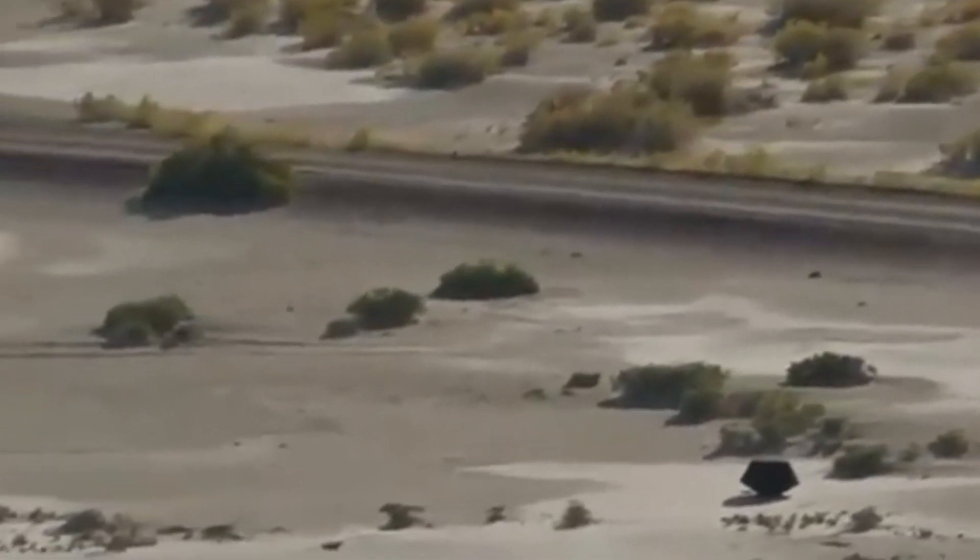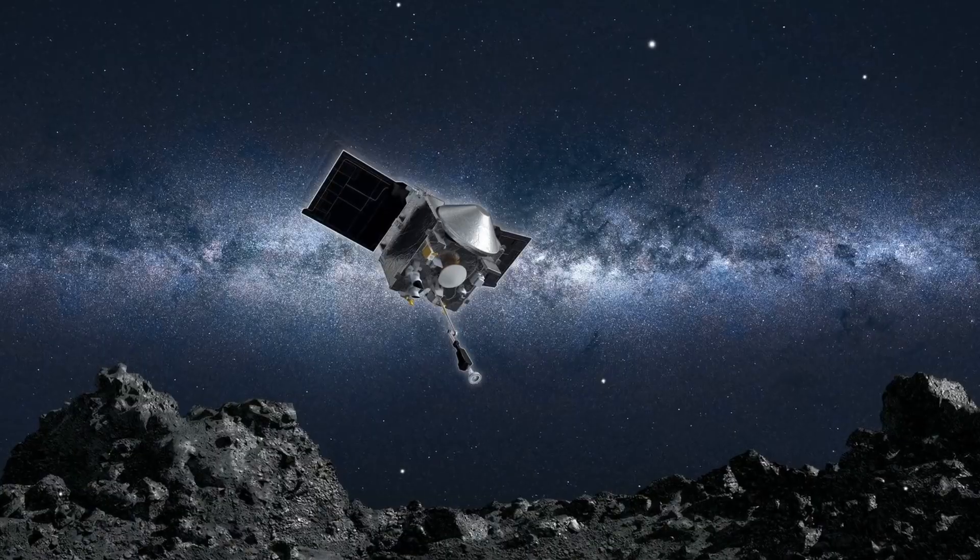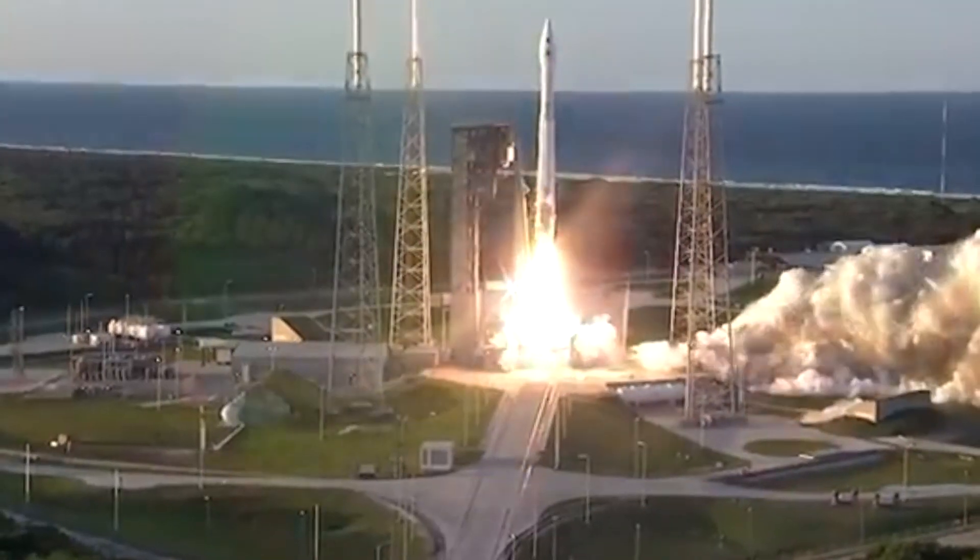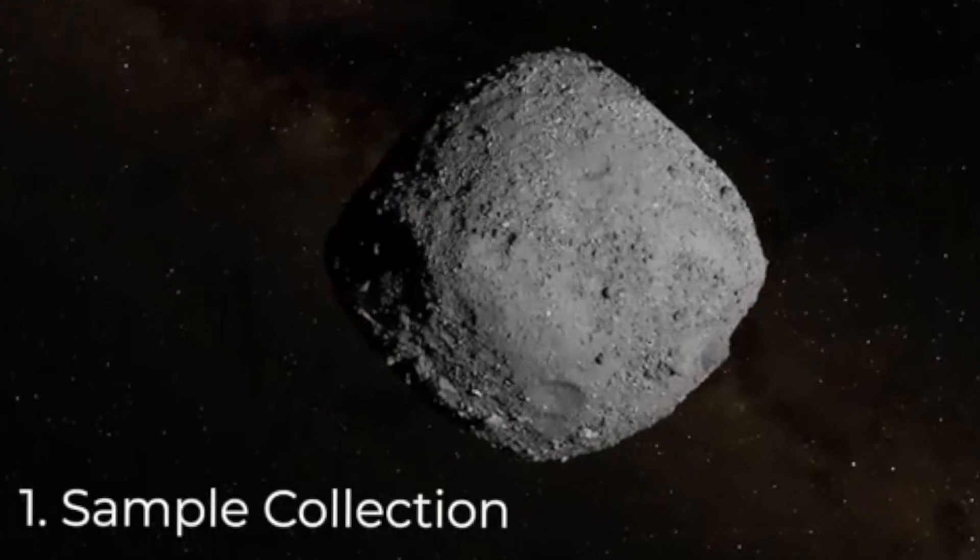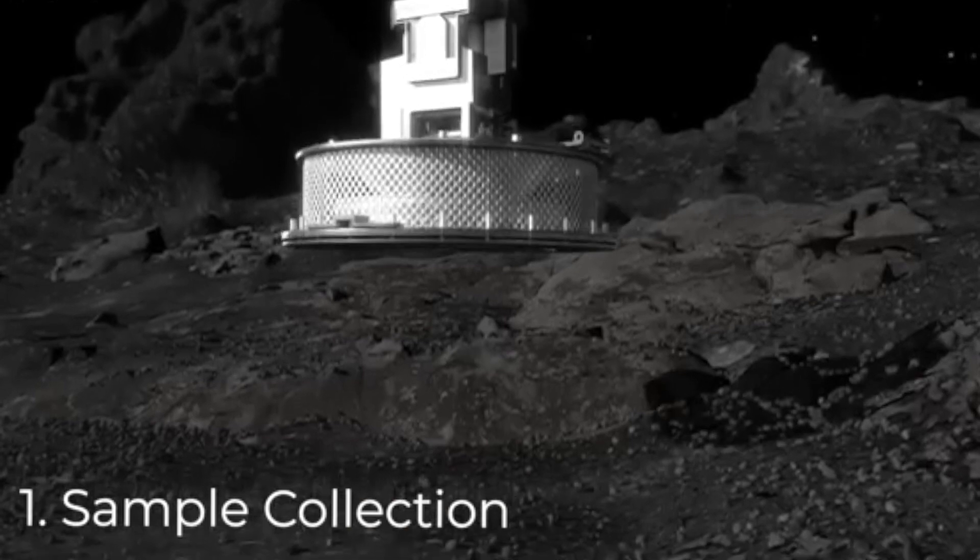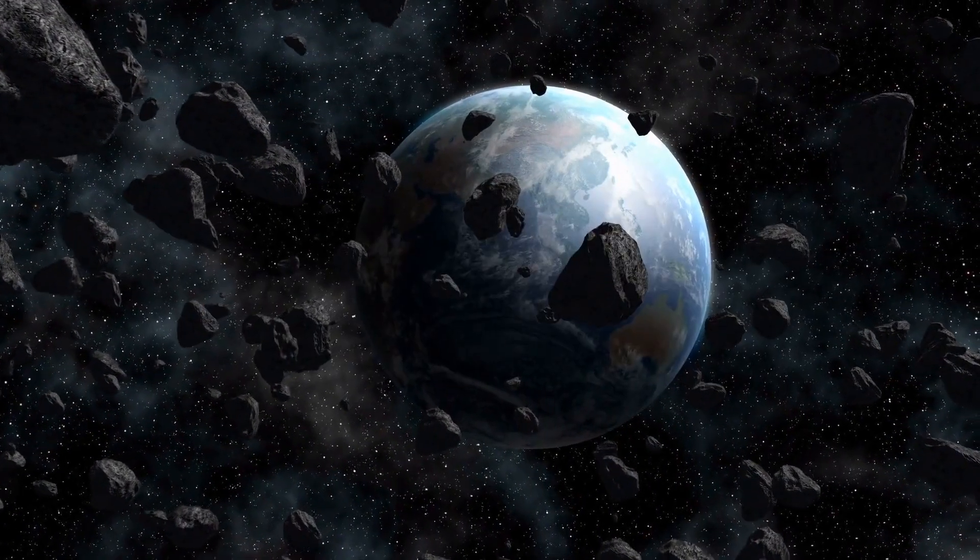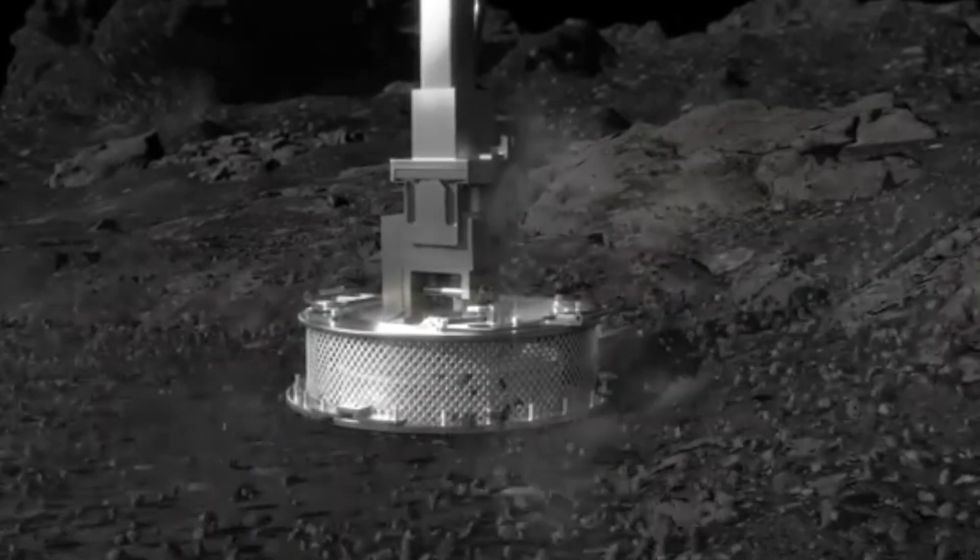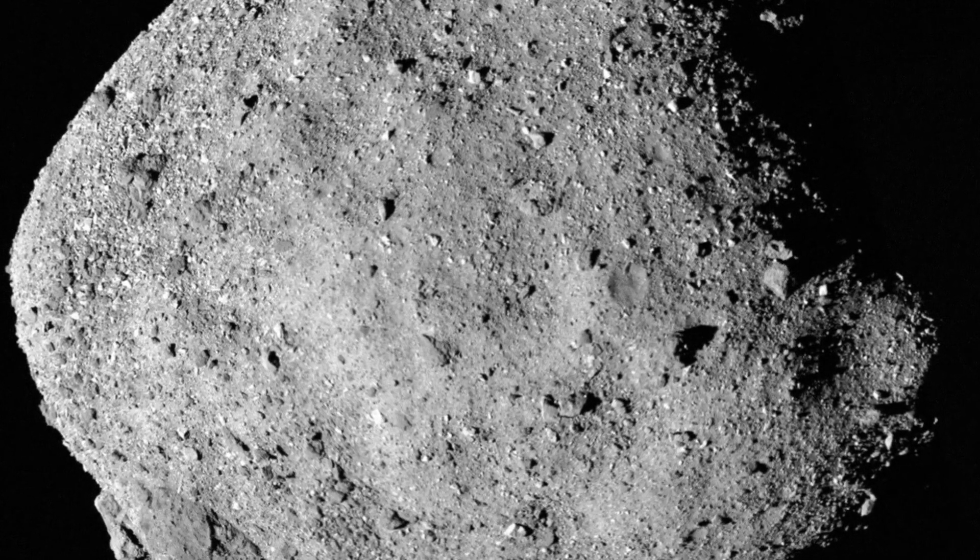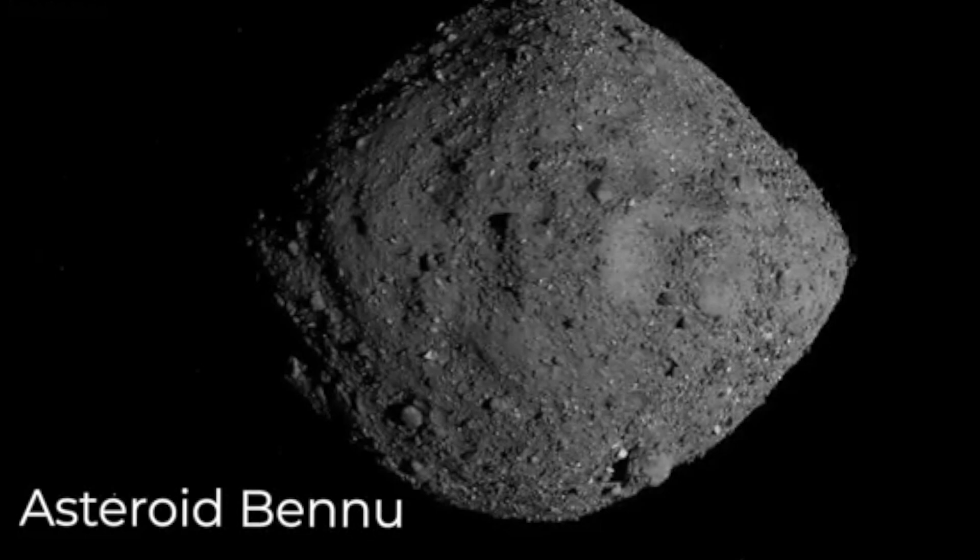To understand the significance of this event, we need to delve into the objectives of the OSIRIS-REx mission. Launched on September 8, 2016, the mission had three primary goals. First, it aimed to collect pristine samples from the surface of Bennu, providing scientists with invaluable material to study and better understand the composition of primitive asteroids. Second, astronomers sought to characterize Bennu, mapping its surface, identifying its composition, and evaluating its potential as a resource for future space exploration.